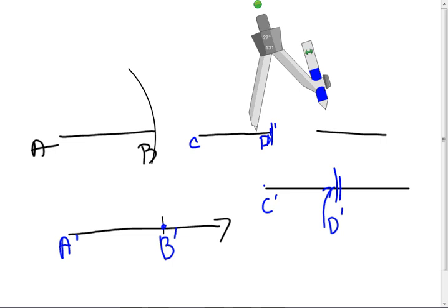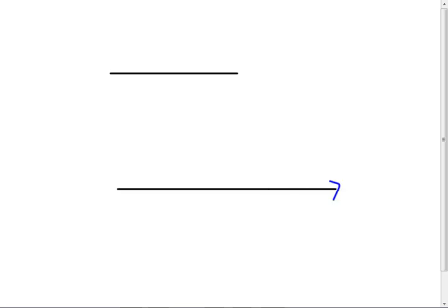Some of you are working ahead without listening to the lesson. We are not using rulers. Here's a line — I want to copy that. There's my ray. A, B. You take your compass and you put your point at A, and you open this up to get to B. Then you make the mark. You're not measuring with the ruler, so if you measure with the ruler it's wrong.